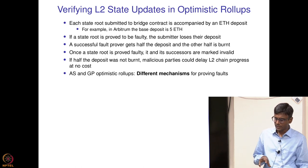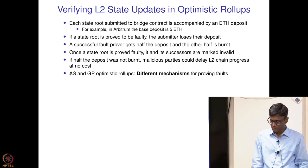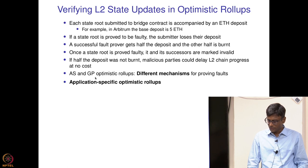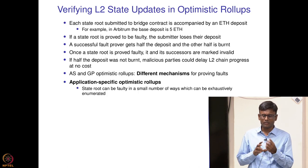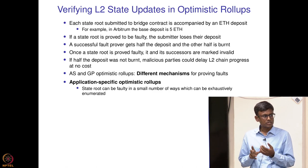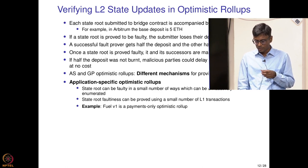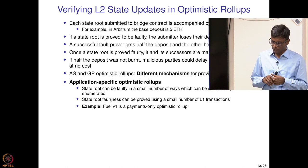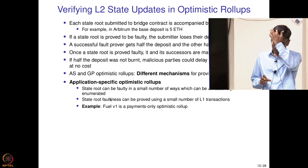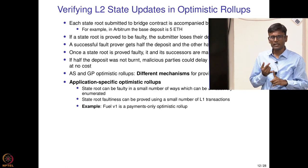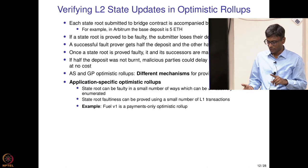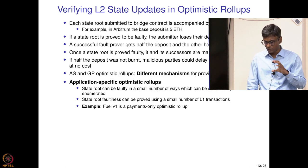The mechanism for proving faults is different in application-specific (AS) and general-purpose (GP) optimistic rollups. In application-specific optimistic rollups, the state root can only be faulty in a finite number of ways, so they can be exhaustively enumerated and proved using a small number of layer 1 transactions. For example, Fuel v1 is a payments-only optimistic rollup. With only payments, the faults can only be double spending or spending more coins than you have — a finite set of allowed state changes.